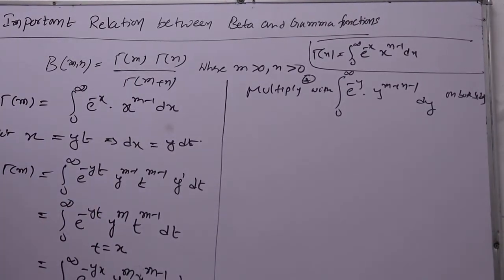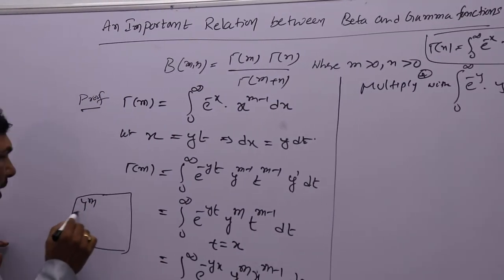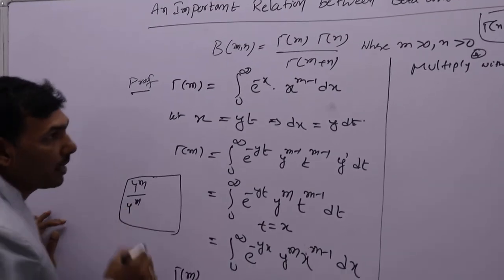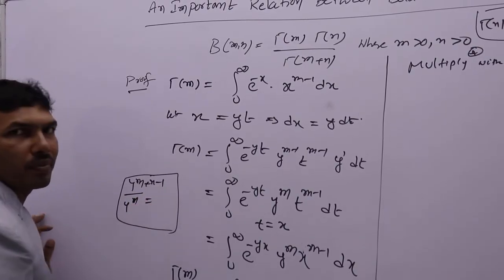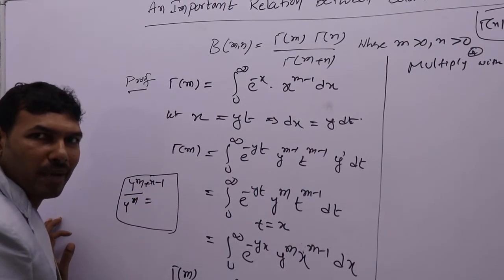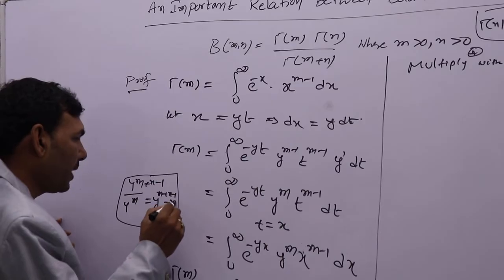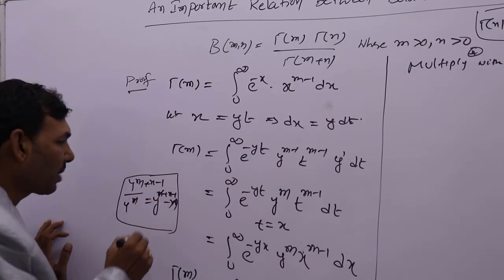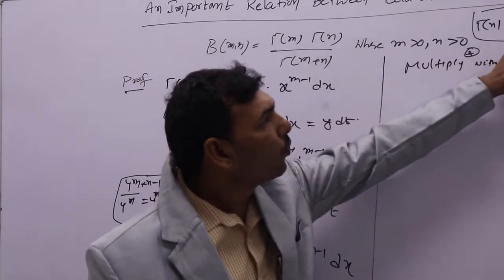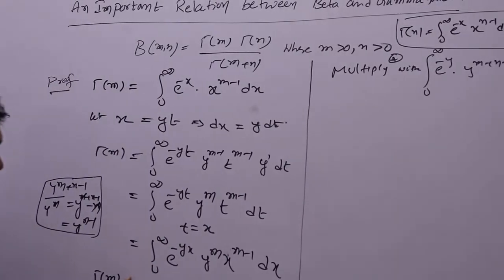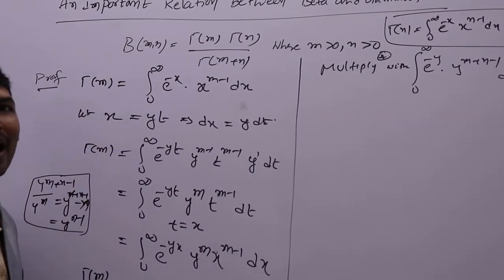See here — already you are having y power m. y power m is in the denominator. y to the power of m plus n minus 1 divided by y power m: using a power m by a power n equals a power m minus n, that means y to the power of m plus n minus 1 minus m. The m's cancel, giving y to the power of n minus 1. That's what we need — y power n minus 1. Integral 0 to infinity, e to the power minus y into y power n minus 1 gives gamma(n).